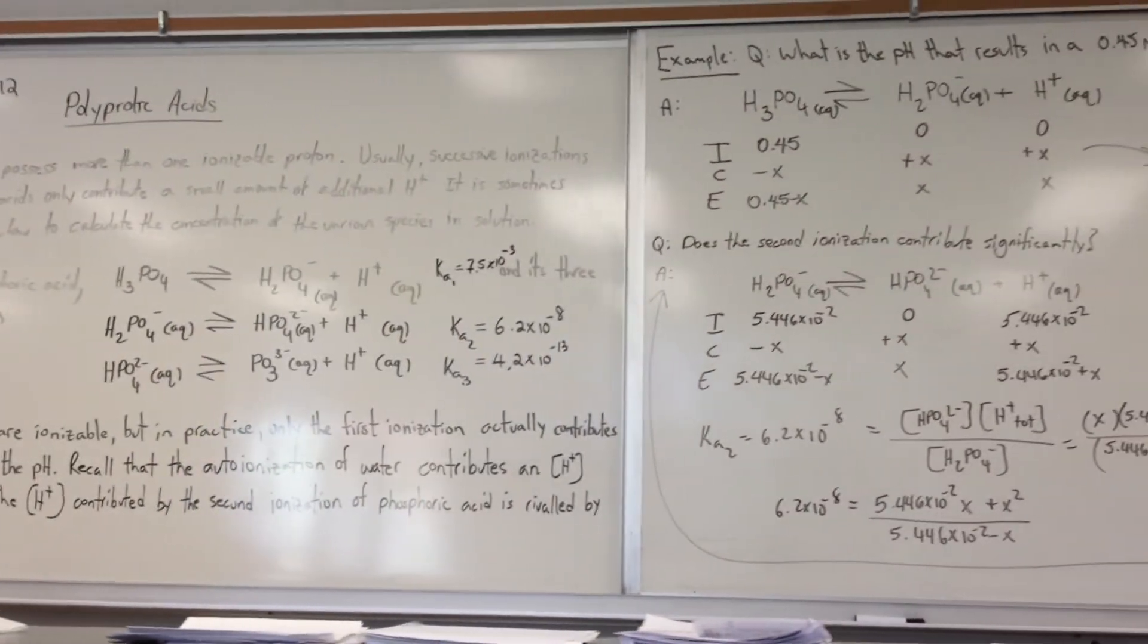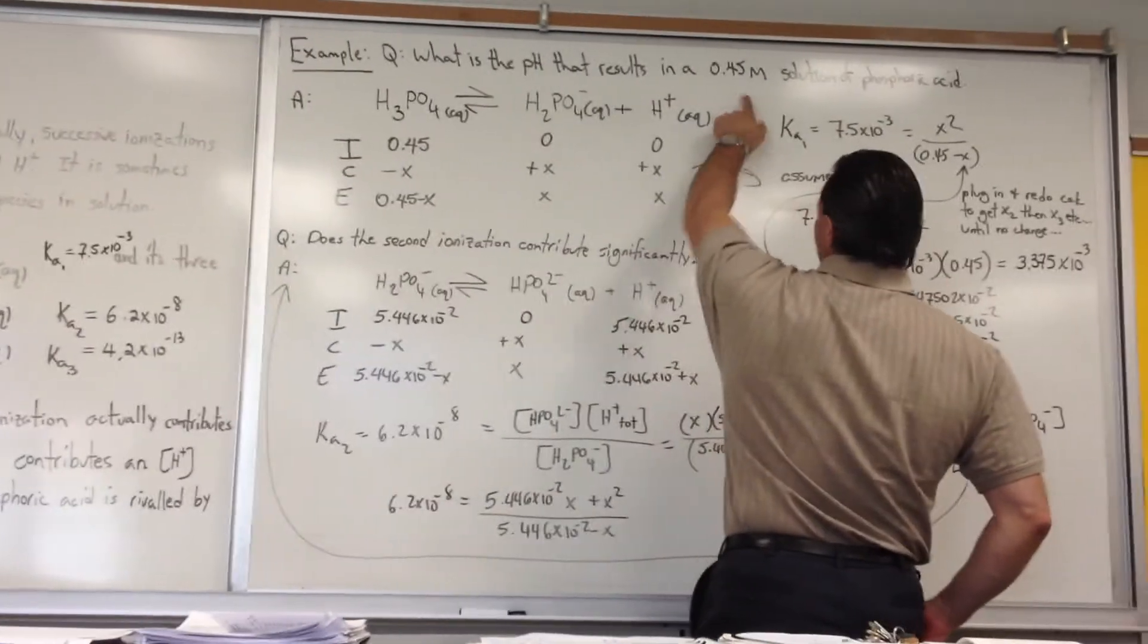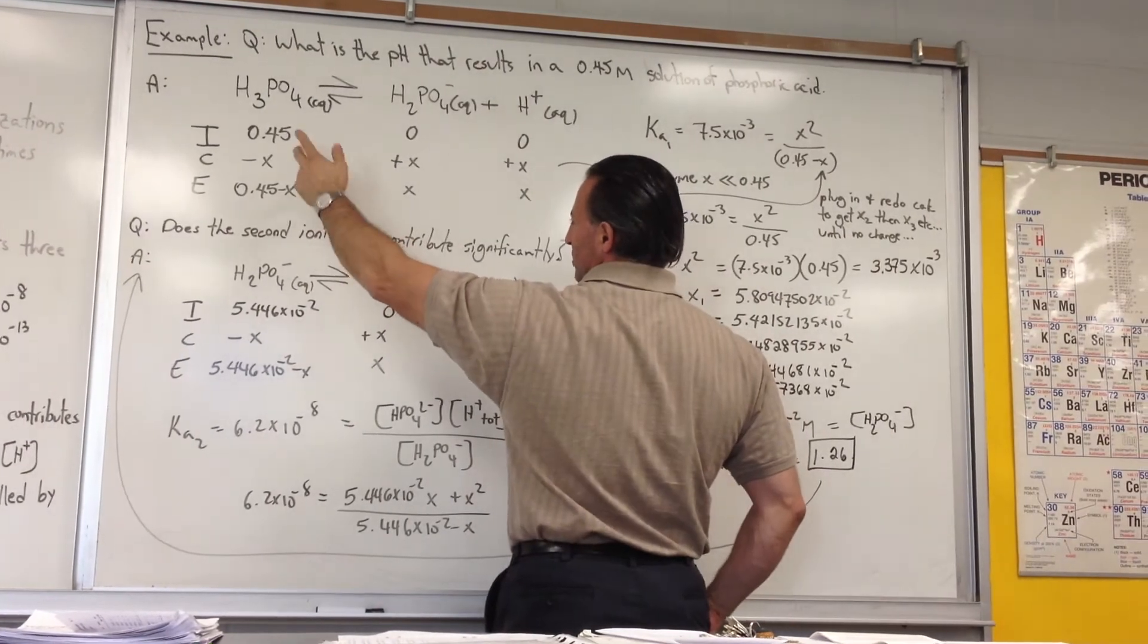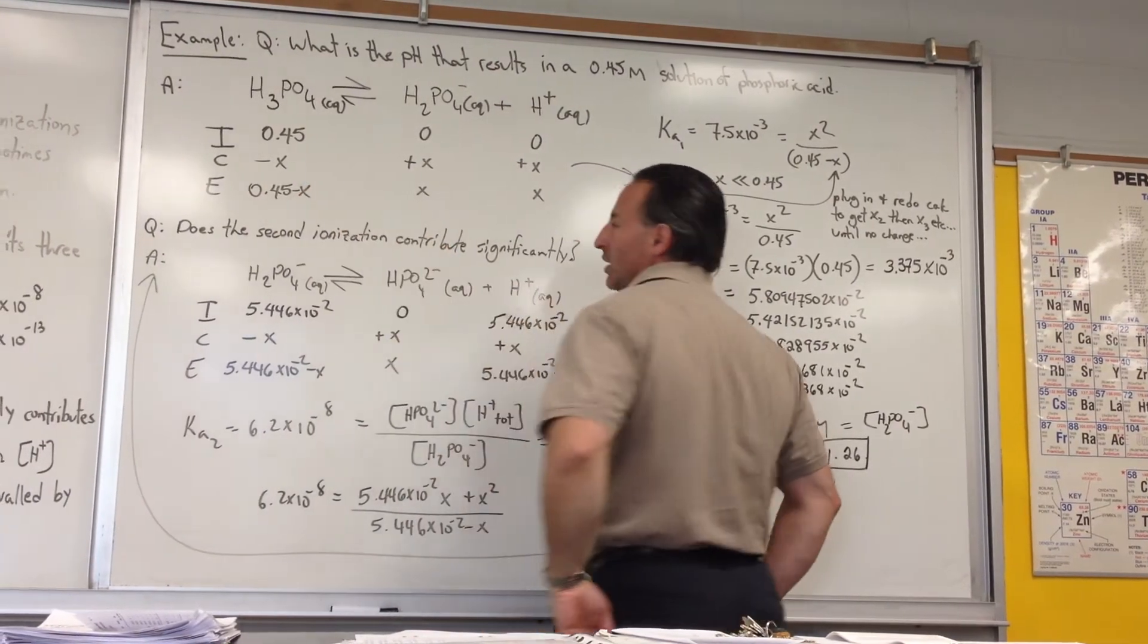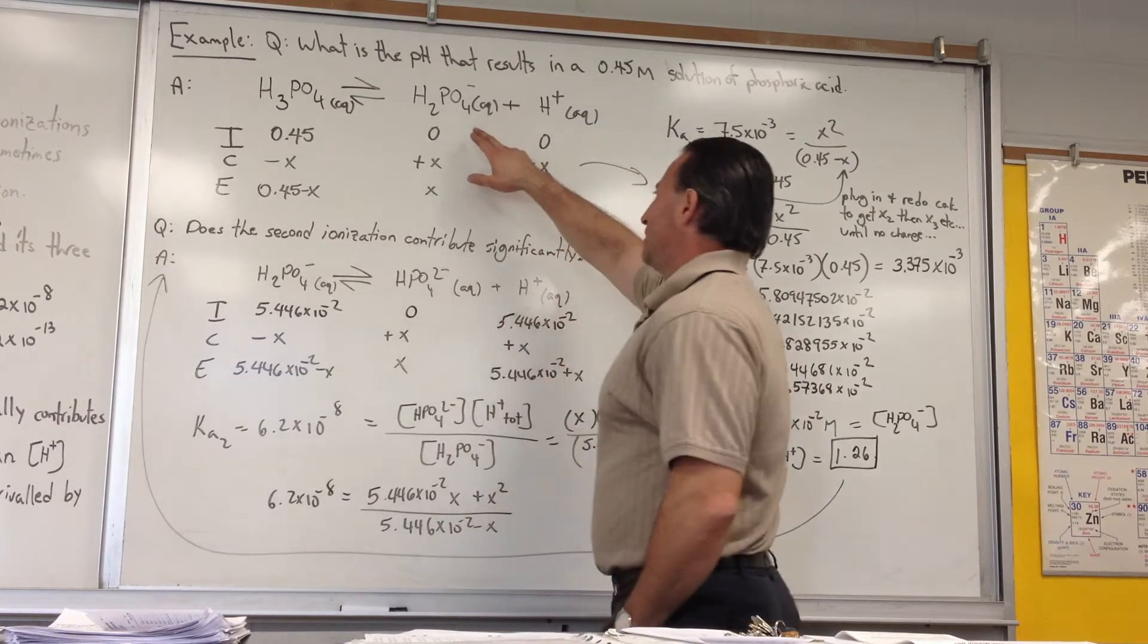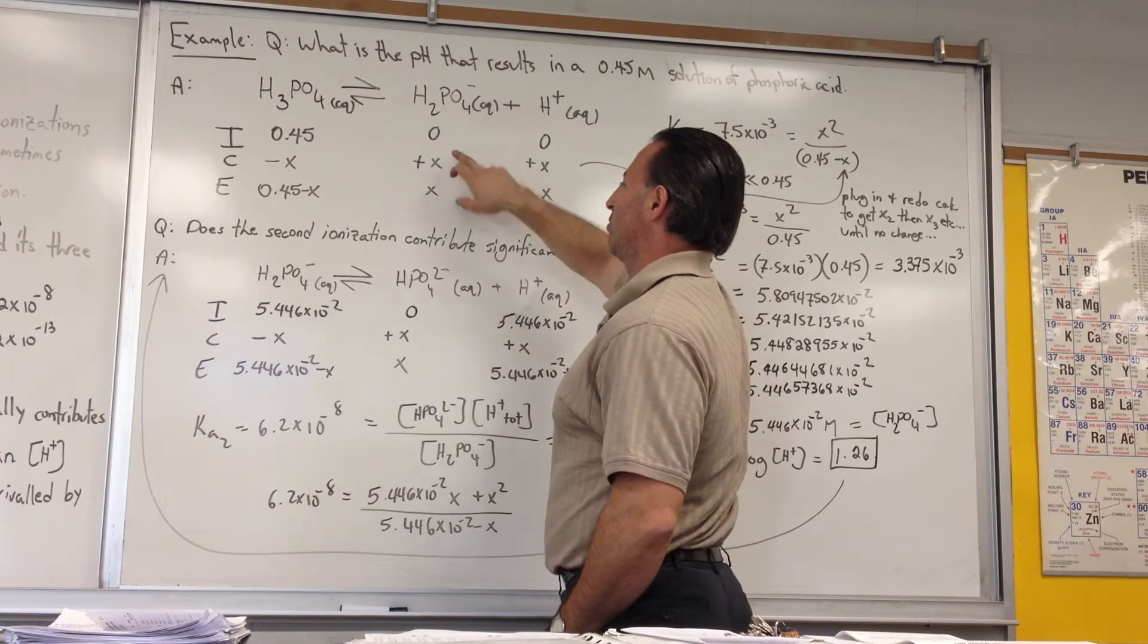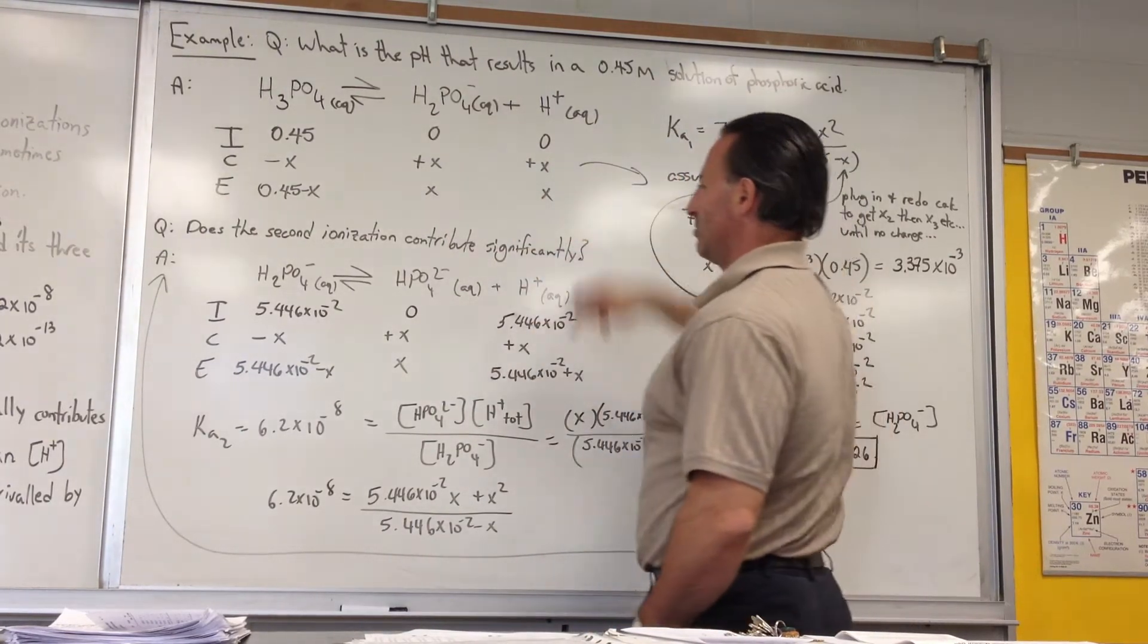We'll set up an ICE table where we depict the chemistry of the first ionization, and we're asked for a 0.5 molar solution of phosphoric acid. So in the similar way as we always do with weak acid, we assume a certain amount X will dissociate so that we get 0.45 minus X at equilibrium. Dihydrogen phosphate forms in the same amount as this breaks down, so we get plus X forming, and that at equilibrium is X amount. And the H plus is also the same thing, X amount.